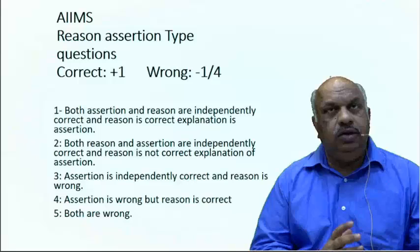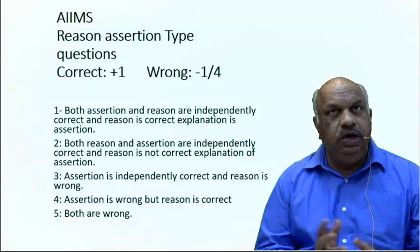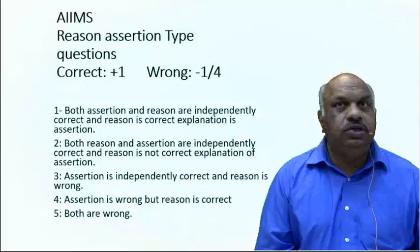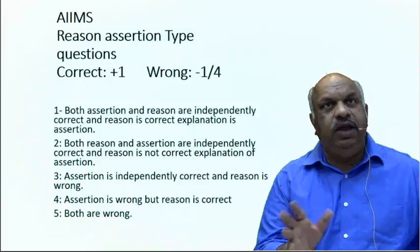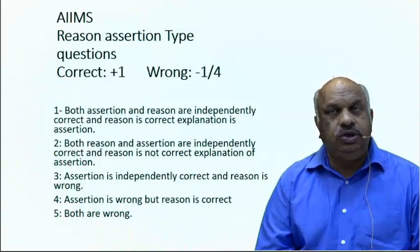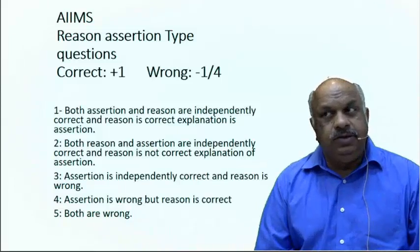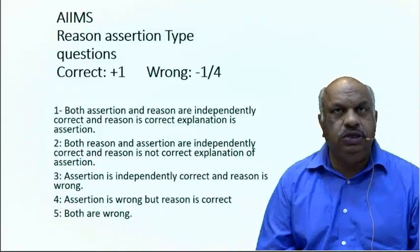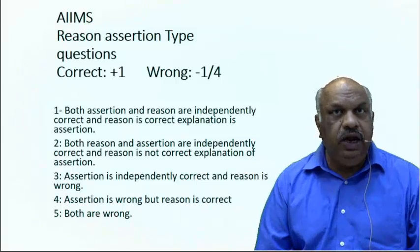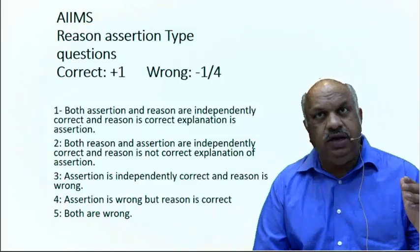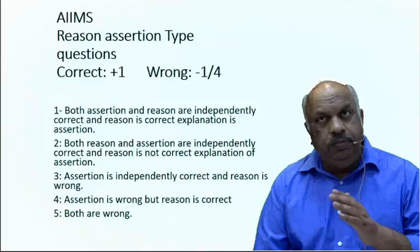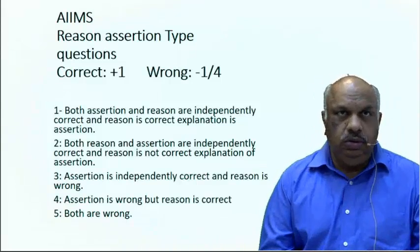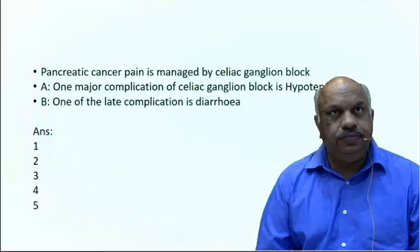In reason-assertion type, the negative marking is only one by four. The five options are: first, both A and B are correct and B explains A; second, both are correct but independently correct and not related to each other; third, A is correct and B is wrong; fourth, B is correct and A is wrong; and fifth, both are wrong.